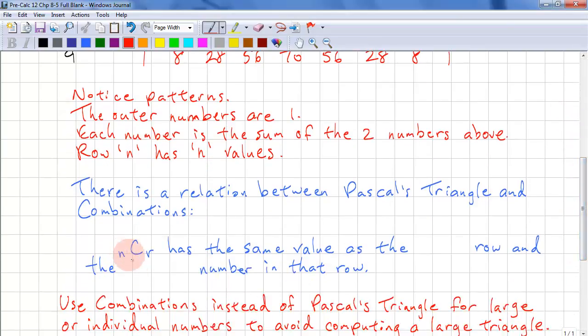So n choose r has the same value as the n plus 1th row and the r plus 1th number in that row.